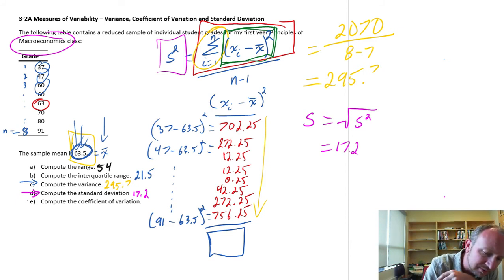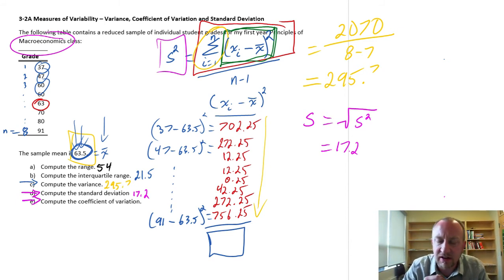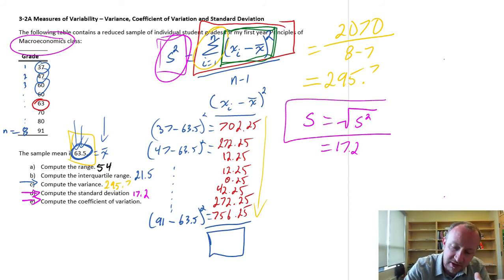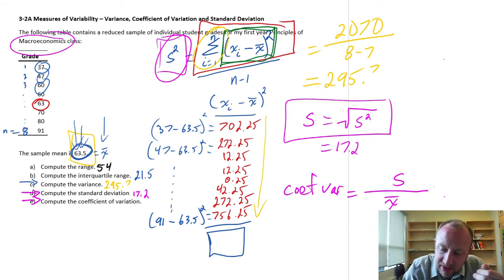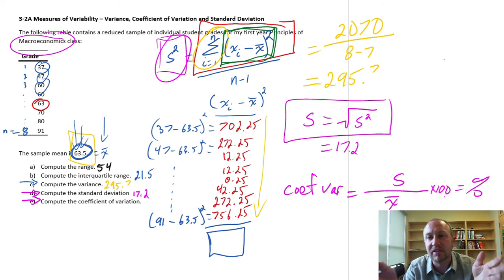Okay. Now, the next one, the coefficient of variation, this one as well stems from this initial calculation. So, once we've got the variance, we can easily get the standard deviation which is here. And the coefficient of variation, I'll just call it the coeff variation. This is the standard deviation divided by the sample mean. And this, we times this by 100 and now this we can say is a percent.